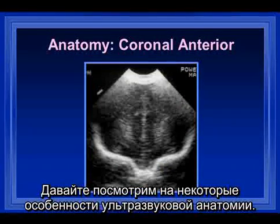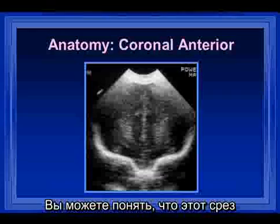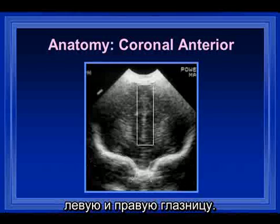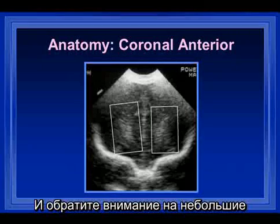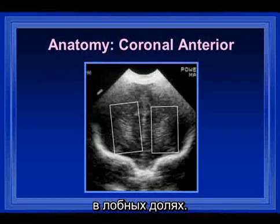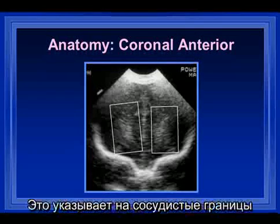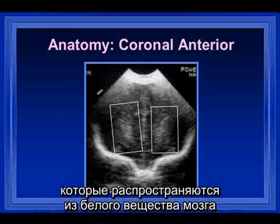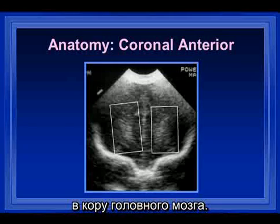Looking at ultrasound anatomy, this is a very far anterior view — you can identify it because you can see the left and right orbits. The interhemispheric fissure is seen here. Note the little areas of brighter echogenicity in the frontal lobes. This is referred to as the periventricular blush. It represents vascular markings as well as neurons as they extend from the deep white matter to the cortex of the brain.